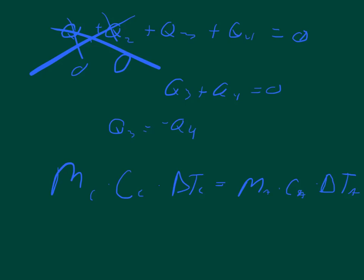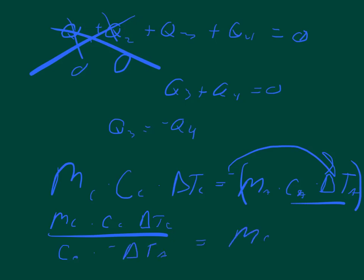So this whole term is negative and we're going to distribute that negative to the T and we're going to solve for the mass. And so all we got to do is divide this side, and what we end up with is that the mass of copper times the specific heat of copper times the change of temperature of copper divided by the specific heat of aluminum times the negative change of temperature of aluminum is equal to the mass of aluminum.